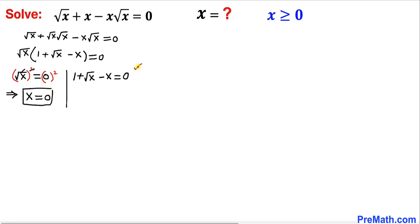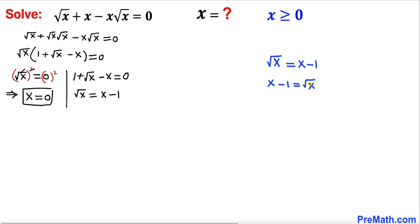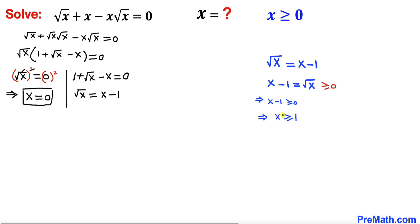Now let's focus on the second factor: 1 plus square root of x minus x equals zero. We move the 1 and negative x to the other side, giving us square root of x equal to x minus one. Since x is greater than or equal to zero, square root of x is also greater than or equal to zero. Therefore x minus one must be greater than or equal to zero, meaning x is greater than or equal to one. Keep that condition in mind.